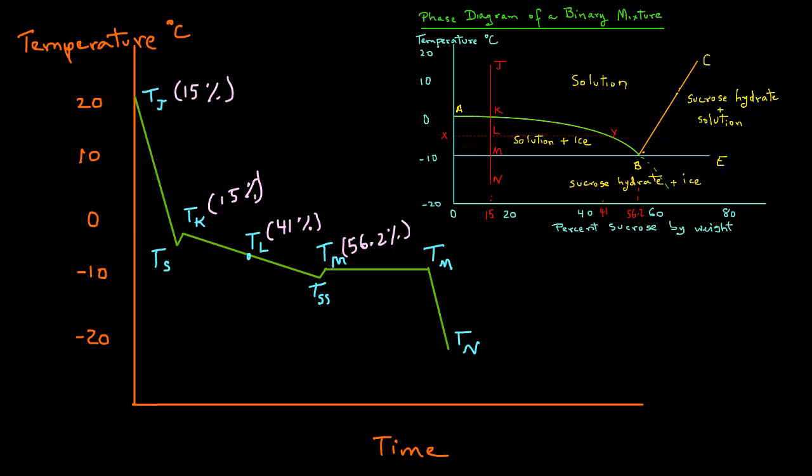As more heat is removed, the concentration remains at 56.2% sucrose, and more ice crystals and sucrose hydrate are formed in constant proportion. The temperature TM remains constant as ice and sucrose hydrates crystallize in equal proportion and the ensuing heat of crystallization is removed. Once the solution is completely solidified at temperature TM, further cooling of the solid mixture to temperature TN results in removal of sensible heat, which is about 0.5 calories per gram per degree C.